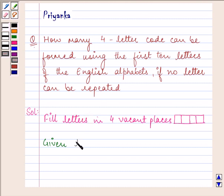So given letters are A, B, C, D, E, F, G, H, I, J. These are the first ten letters of the English alphabet.